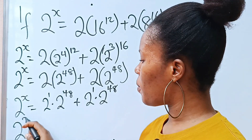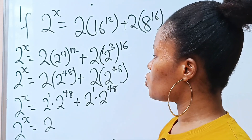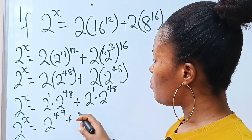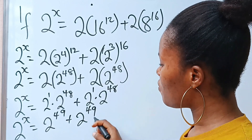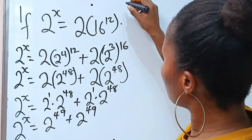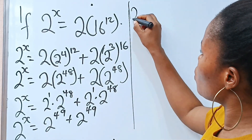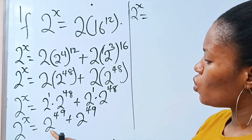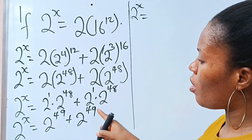So we have 2 to the power of x is equal to 2. We pick one 2 and add the powers, giving us 49, plus the same thing here, giving us another 49. So 2 to the power of x is equal to 2 to the power of 49 plus 2 to the power of 49.